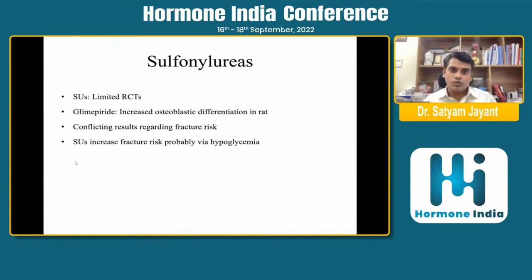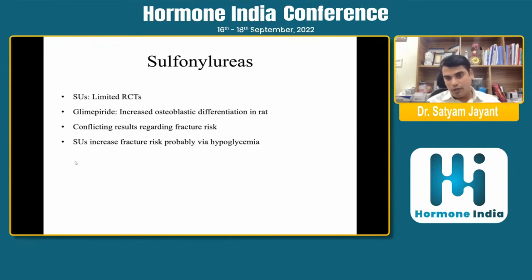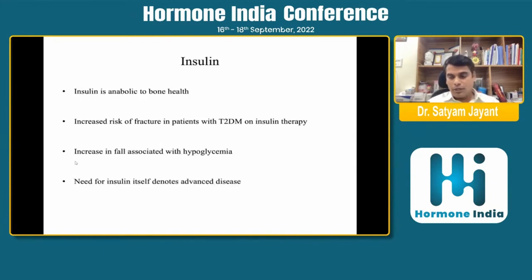Sulfonylureas have limited RCT data demonstrating fracture risk. Glimepiride increases osteoclast differentiation in rats but human data is lacking and results are conflicting. Sulfonylureas increase fracture risk probably because of hypoglycemia — once a patient develops hypoglycemia, there is a higher risk of fall, which may precipitate fracture in high-risk individuals who are lean and thin. Sulfonylurea per se does not increase fracture risk.